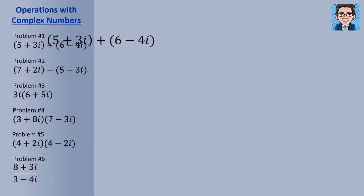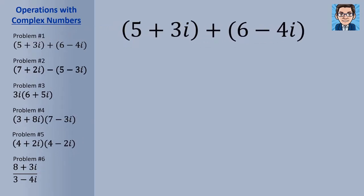In the first example, we're adding two complex numbers. We add the real parts to get 11, and we add the imaginary parts: 3 and negative 4 gives minus 1i. It's just like combining like terms — the real parts are like terms and the imaginary parts are like terms — giving us 11 minus i. There's no extra step since we only have i, not i squared.